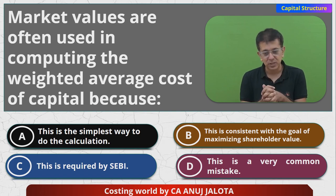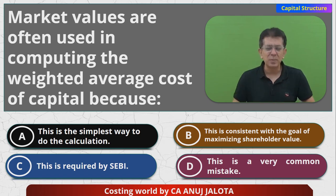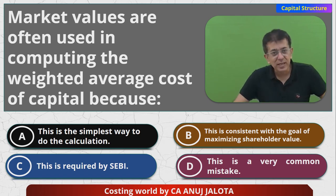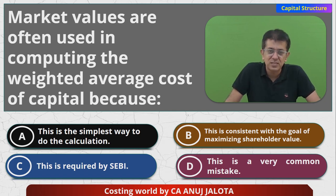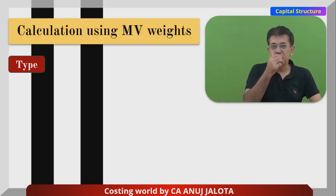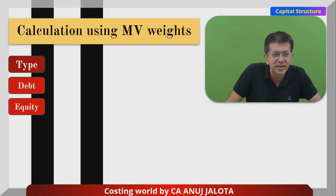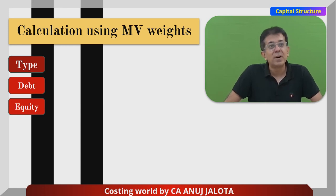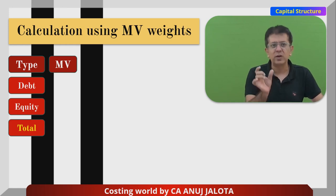We often use market value weights for a very simple reason: the aim of every company is wealth maximization — specifically shareholders' wealth — and hence checking market value makes maximum sense. WACC is calculated in a table format where you list the type of capital, for example equity and debt.